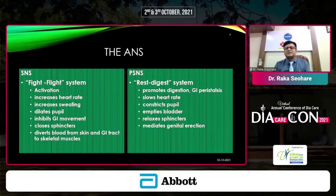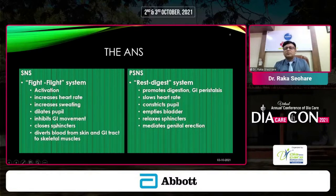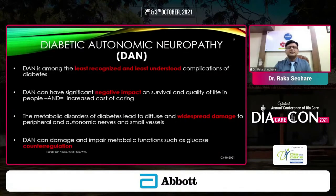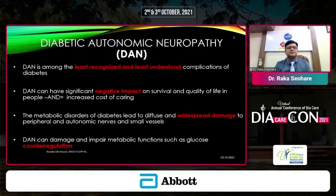The parasympathetic system is the rest-and-digest system, providing a perfect balance. It promotes digestion, GI peristalsis, slows heart rate, constricts pupils, empties the bladder, relaxes sphincters, and mediates genital erection — though ejaculation is controlled by the sympathetic nervous system.